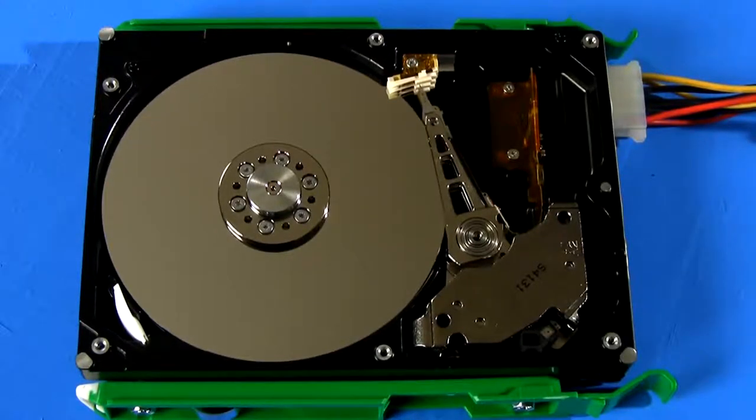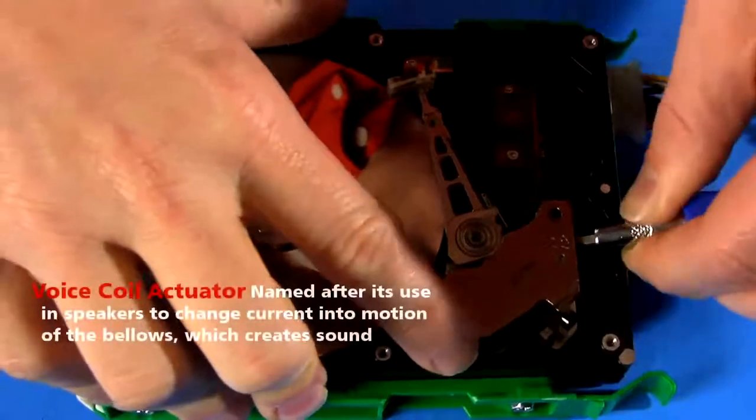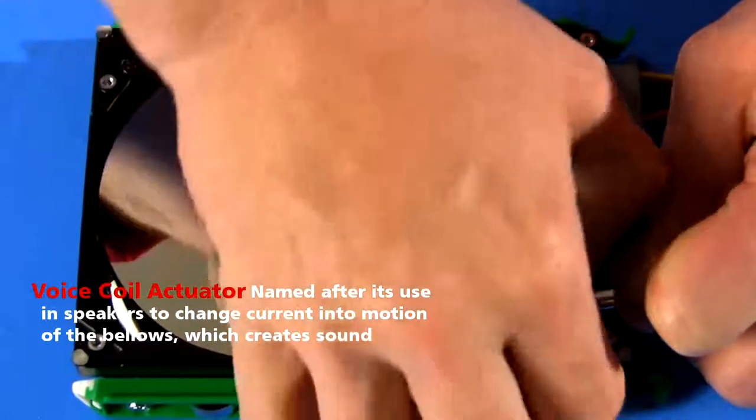The first order of business is to move it with great control. To position the arm, engineers use a voice coil actuator. The base of the arm sits between two powerful magnets. They're so strong, they're actually kind of hard to pull apart.